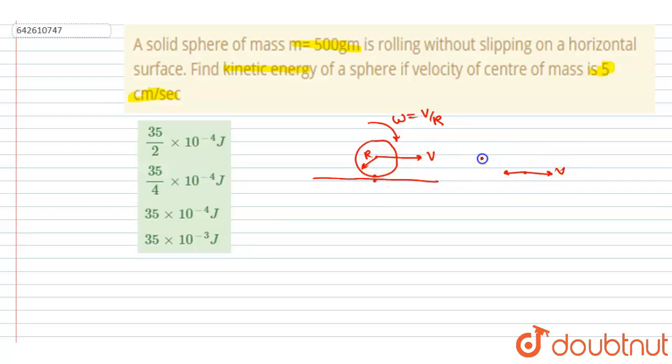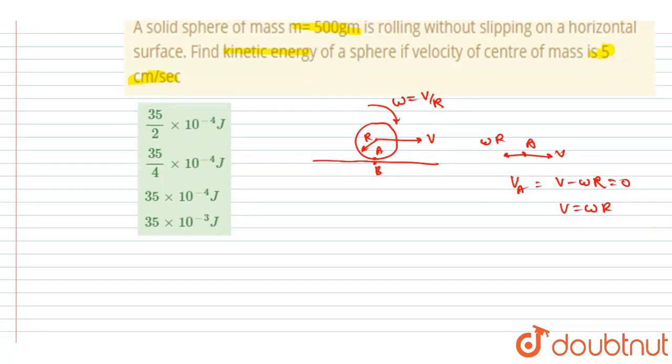So for that, if you see here, this velocity is v, then this velocity will be omega r. And the A point should be having the velocity as that of B point, which is at rest. So I will write v is equals to v minus omega r and equals to 0. From there you will get this relation.